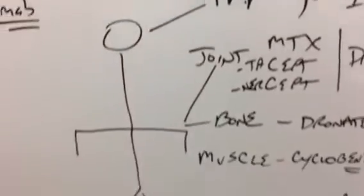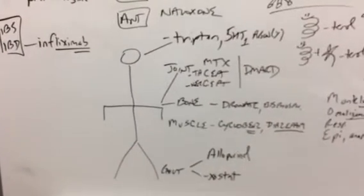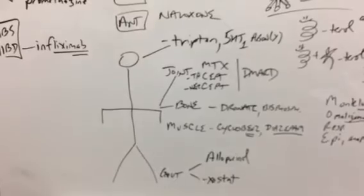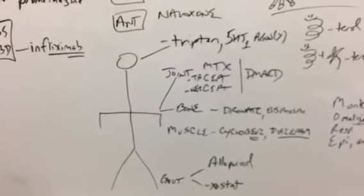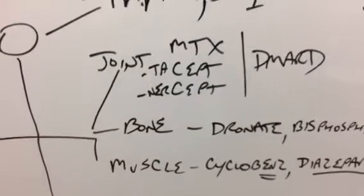Then we go from head to toe here with that little guy here. And for the headache, we have the triptans, which are the 5-HT1 antagonists. We'll just zoom in on that. And then we're going to go joint, bone, muscle.